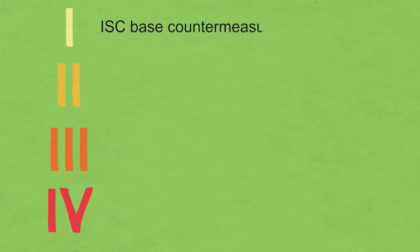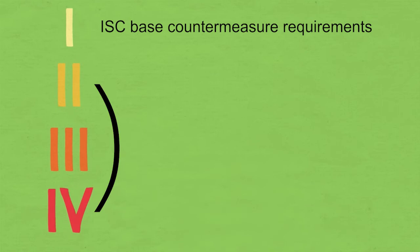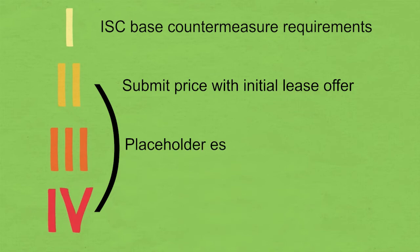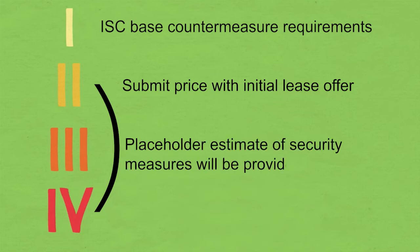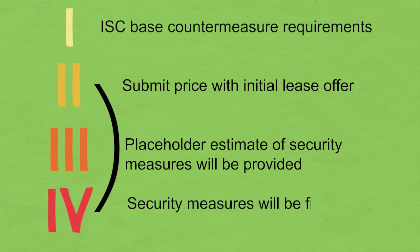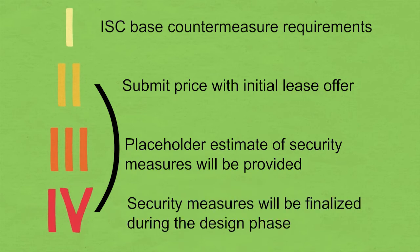The FSL 1 lease attachment contains the interagency security committee's prescribed base countermeasure requirements, which are priced in the shell rent. No countermeasure requirements are considered BSAC. Additional shell items and BSAC requirements are added as the FSL increases. For FSL levels 2, 3, and 4, you will be provided with a placeholder estimate amount for the purpose of evaluation of offers, but the final list of security measures will be determined during the design phase. If the final amount of BSAC is less than the placeholder, then the final rent amount will be adjusted accordingly.